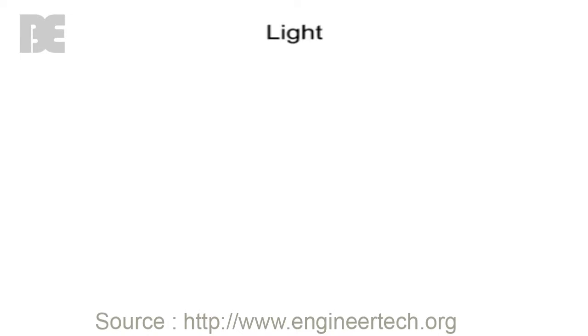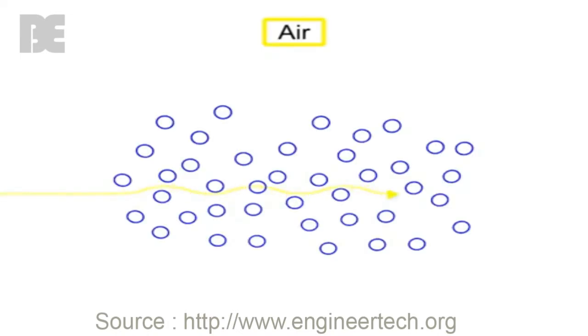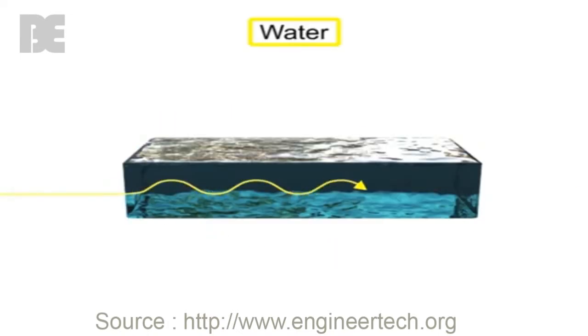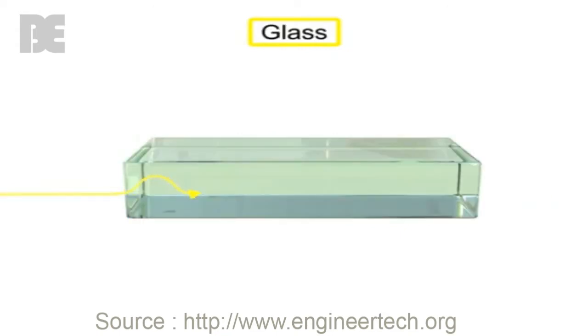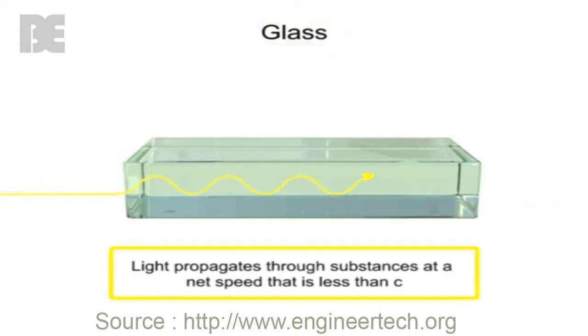When light encounters a medium such as air, water, or glass, it propagates through the substance at a net speed that is less than C.